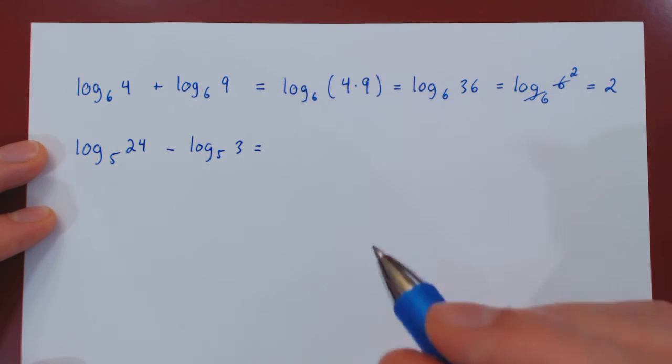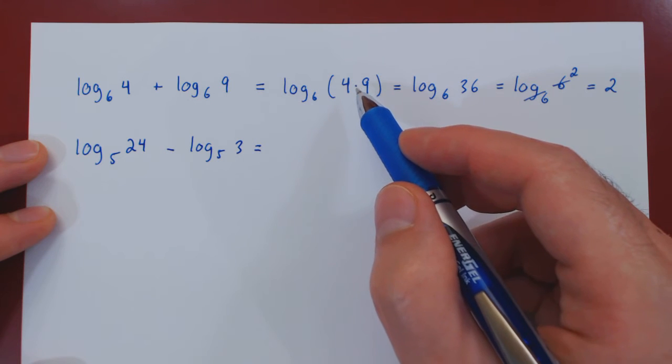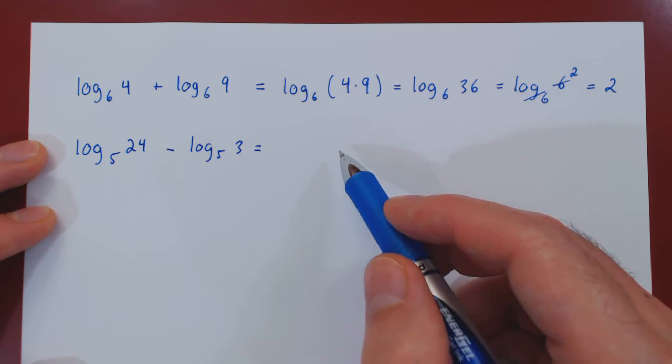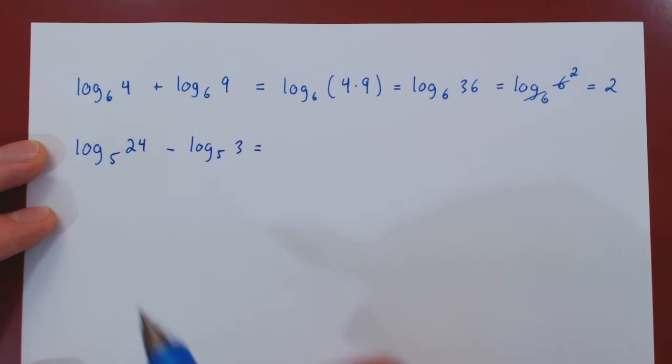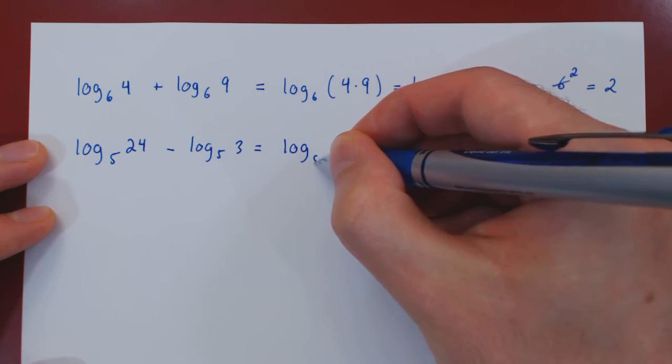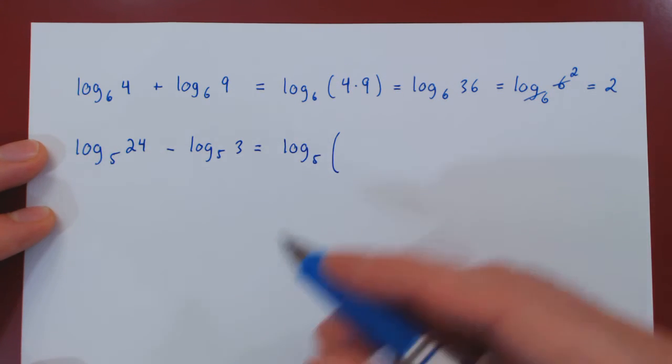Well, if you recall, the logarithm of a product is a sum of logarithms. Well, the logarithm of a quotient is the difference of the logarithms. So this will be the logarithm base 5 of 24 divided by 3.